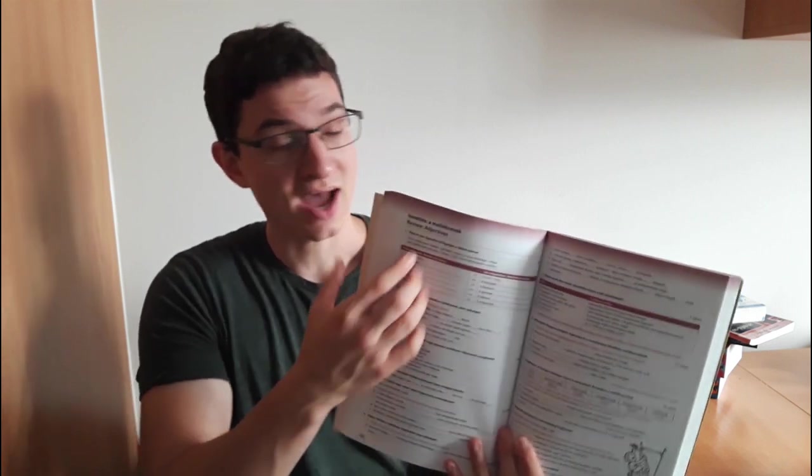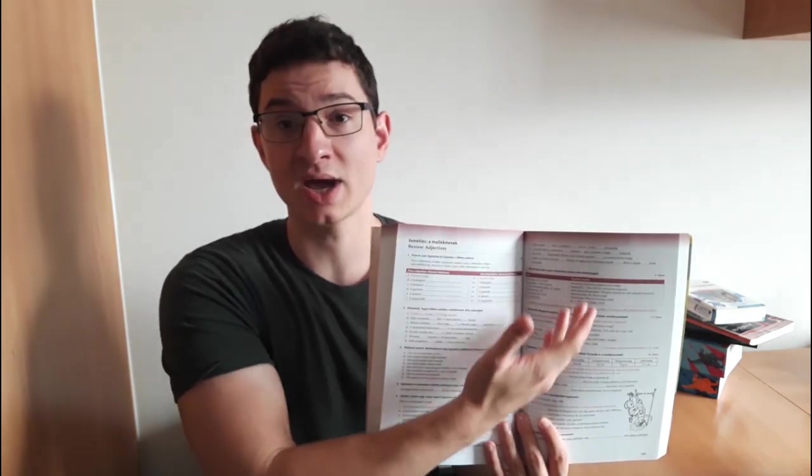So you have on one page a new concept introduced, for example the adjective, and you have the theory written in two languages, in Hungarian and English. Then you have on the other page grammar exercises, not translation exercises. Usually you have to choose the right option or you have to fill in the gaps which I think are very good exercises just to consolidate what you have already learned.